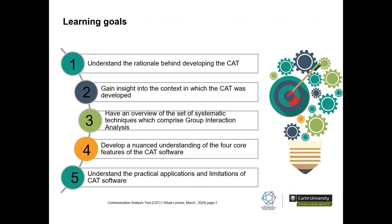I want to begin today by providing you with the rationale behind the development of the CAT, and some brief insights into the context in which the CAT was developed — including the research project which enabled it. I'll also provide an overview of group interaction analysis, the four core features of the CAT software with a demonstration, and finally the practical applications and some limitations of this software.